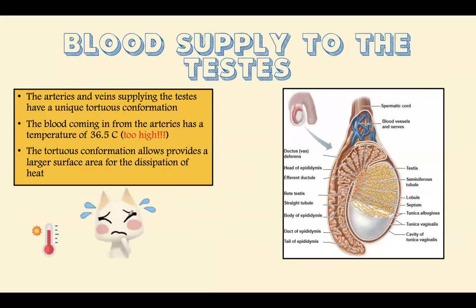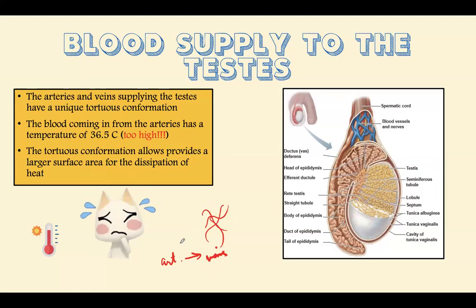Regarding blood supply to the testes: arteries and veins have a unique tortuous conformation. Blood coming in from the arteries is at about 36.5°C, which is too hot. As blood passes through the convoluted arteries and the convoluted veins of the pampiniform plexus, heat is dissipated, lowering the temperature of blood in the testes. You can see the blood vessels in the diagram — the veins allow the blood temperature to drop to the required level.